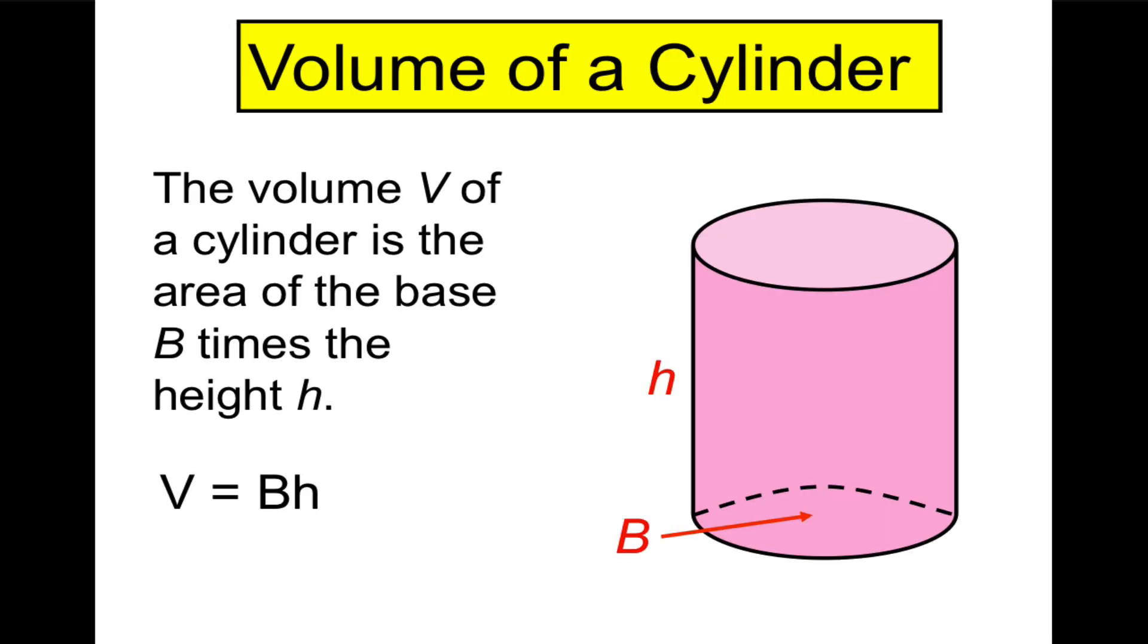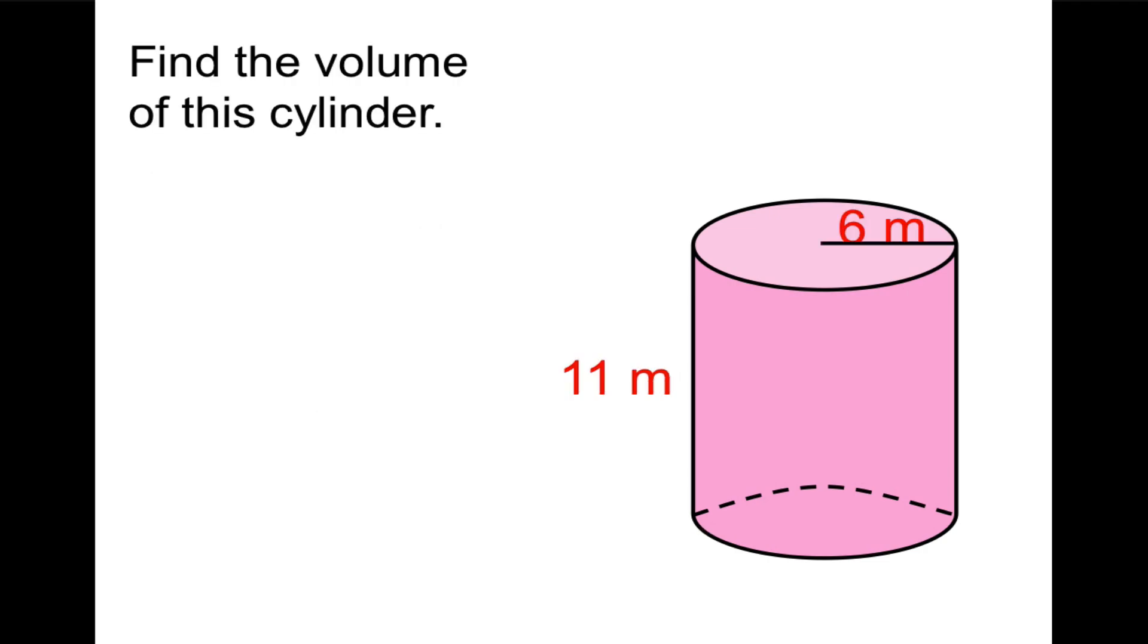Next topic is volume of a cylinder. The volume of a cylinder is the same formula as the volume of a prism because it's basically a round prism. So the volume V of a cylinder is the area of the base B times the height h. So we need to remember the formula for the area of a circle then.